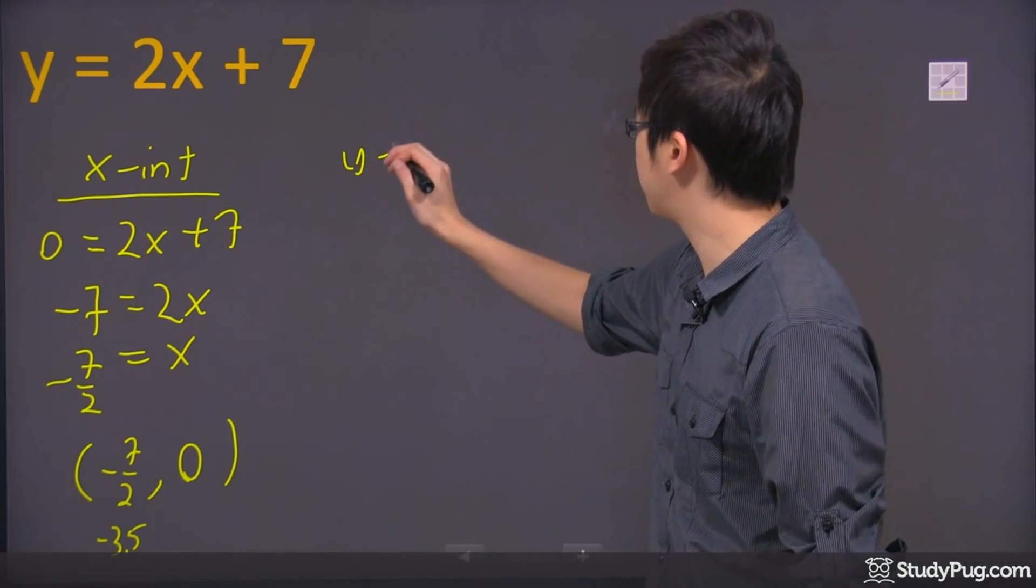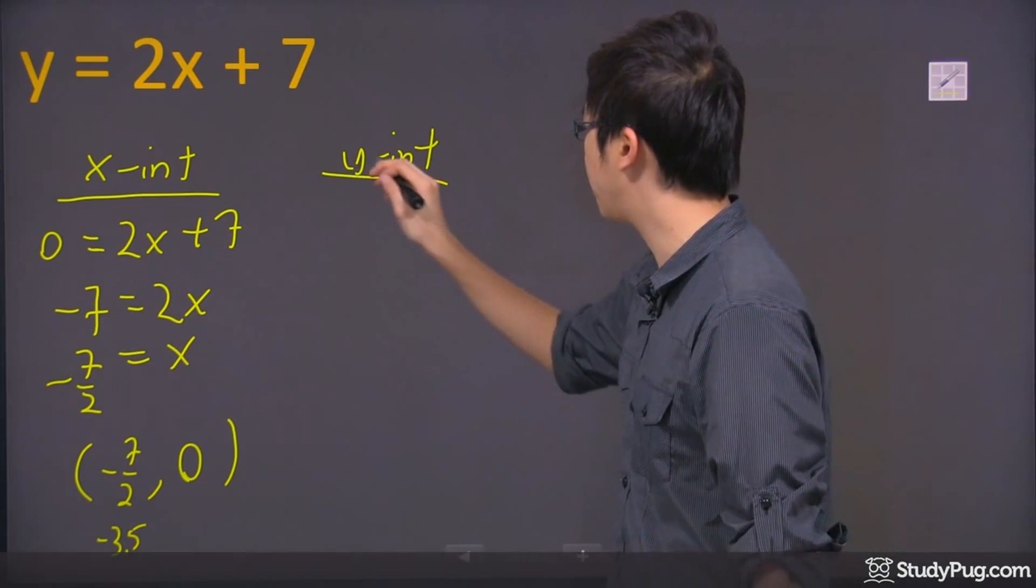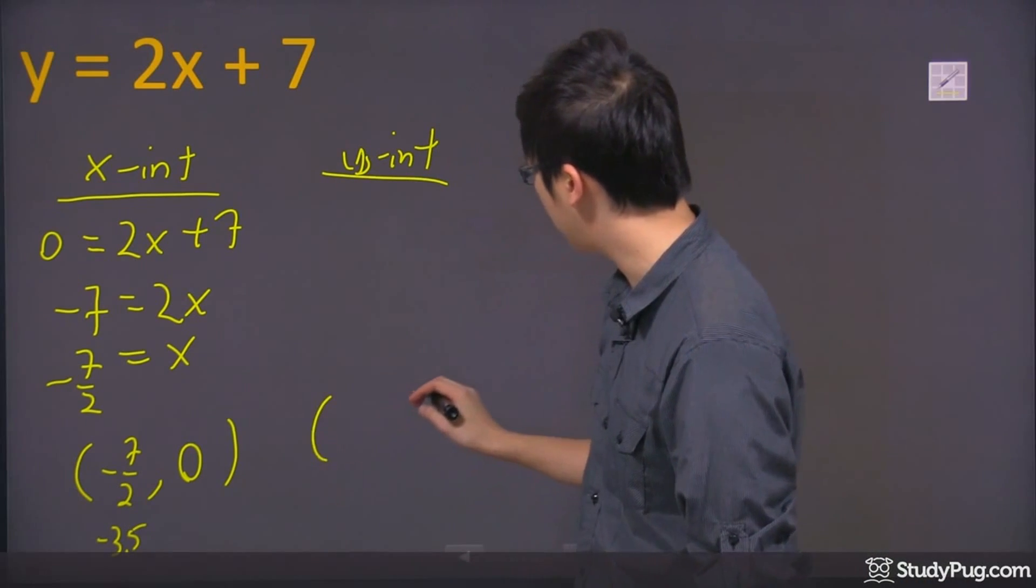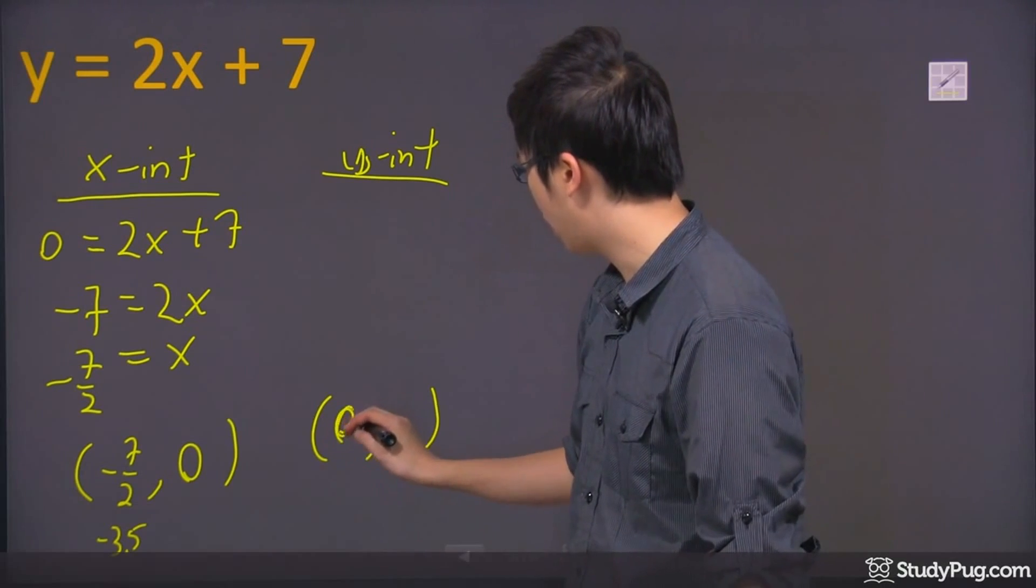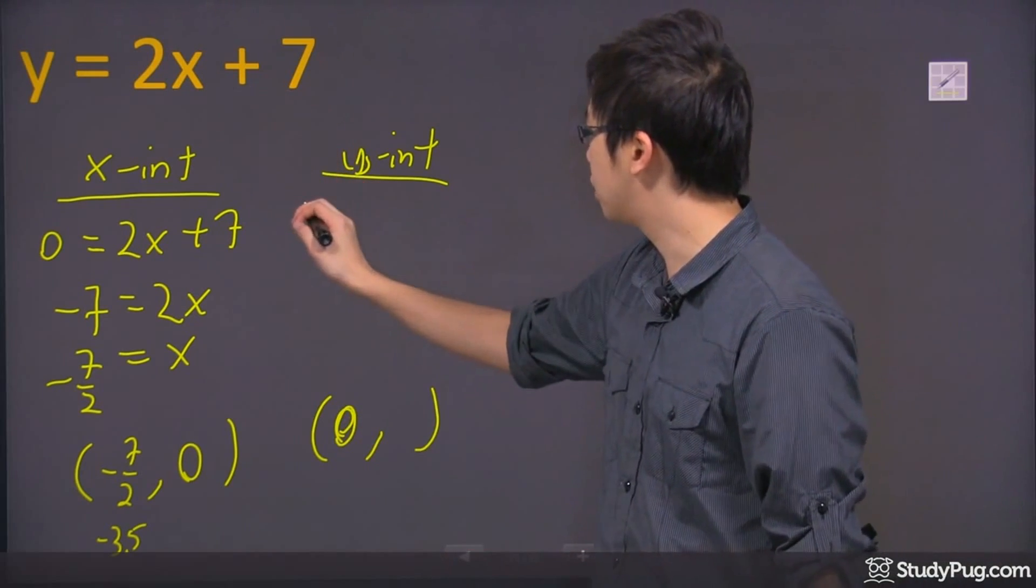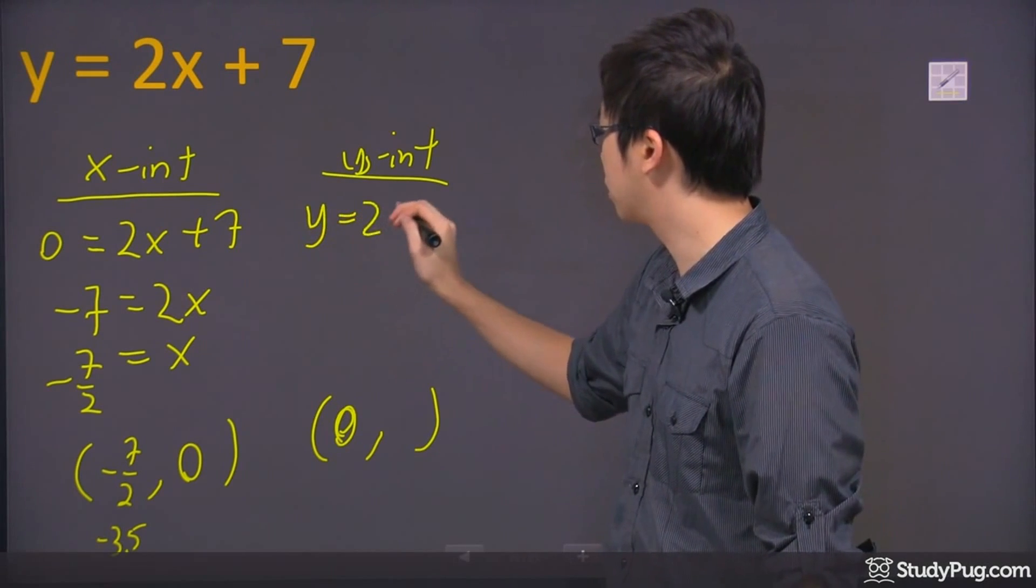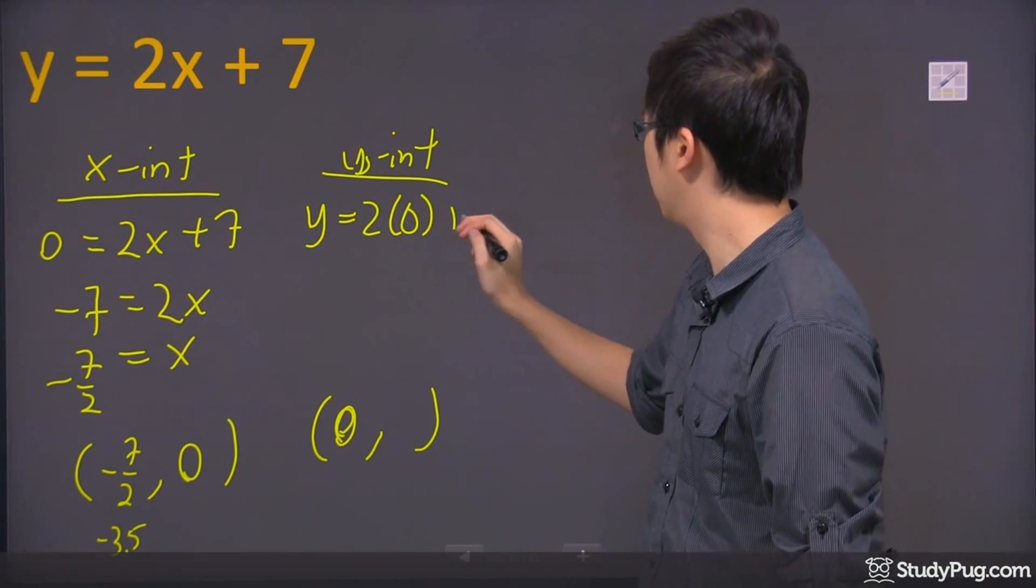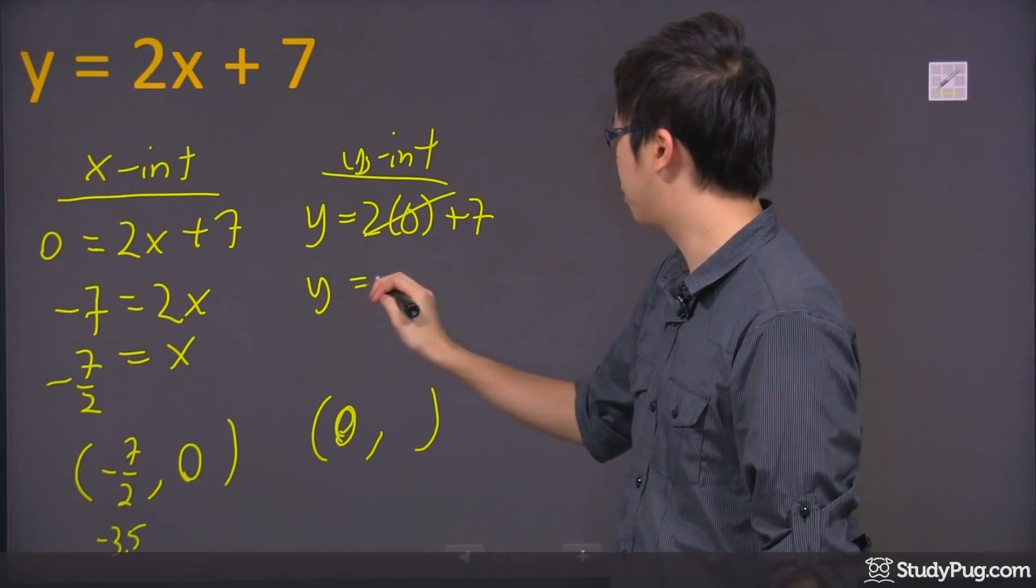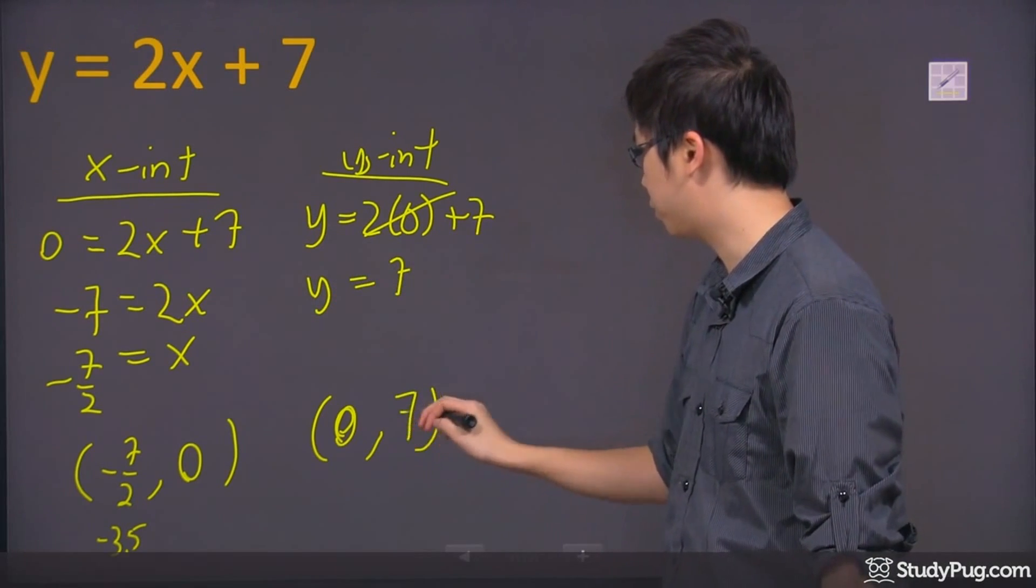Now the y-intercept happens when you have x equal to zero. So my final answer will have the zero, and I'll calculate the y. The y is the missing term, the x is zero. So if x is zero, that part is gone, so y just equals seven. This one's easy, so it's just (0, 7).